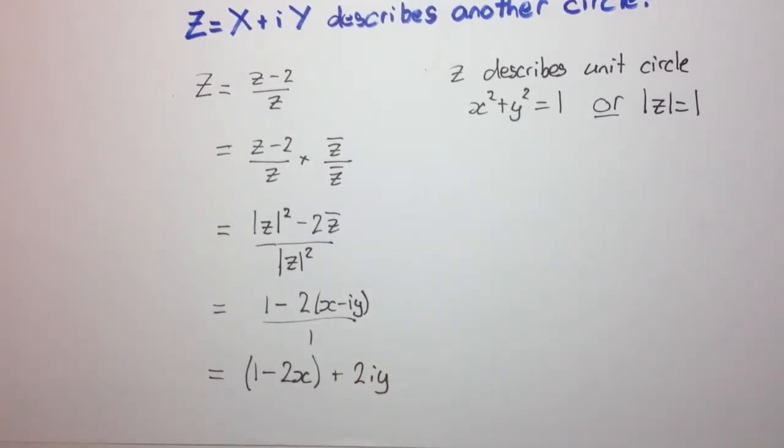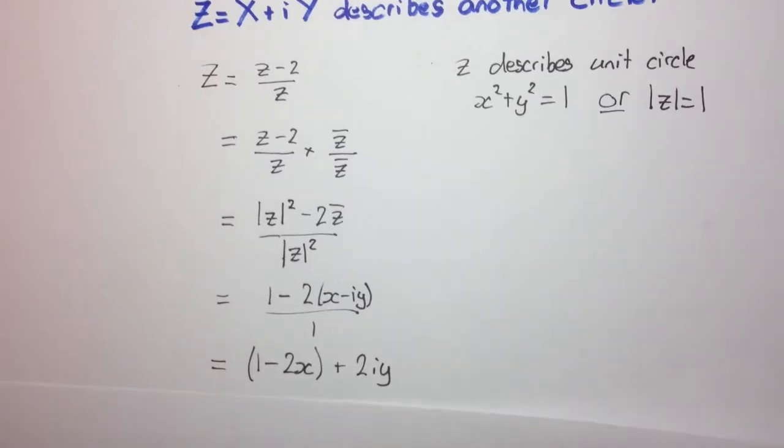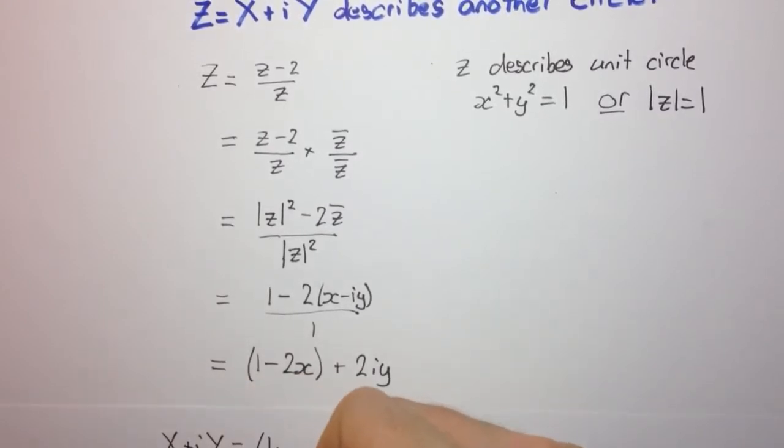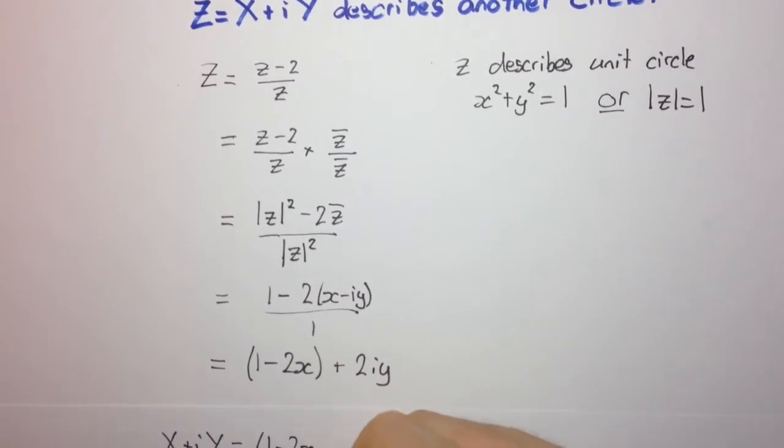Okay. Now, what's this equal to? Well, they told us that capital Z was capital X plus i capital Y. So we can say that, therefore, capital X plus i capital Y is equal to 1 minus 2x plus 2i y.